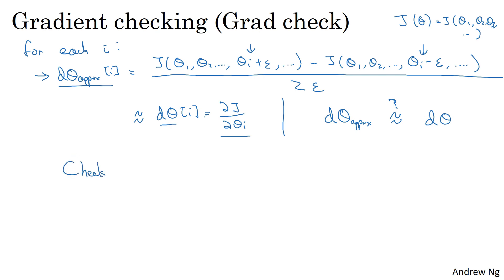And what you want to do is check if these vectors are approximately equal to each other. So in detail, how do you define whether or not two vectors are really reasonably close to each other? What I do is the following.